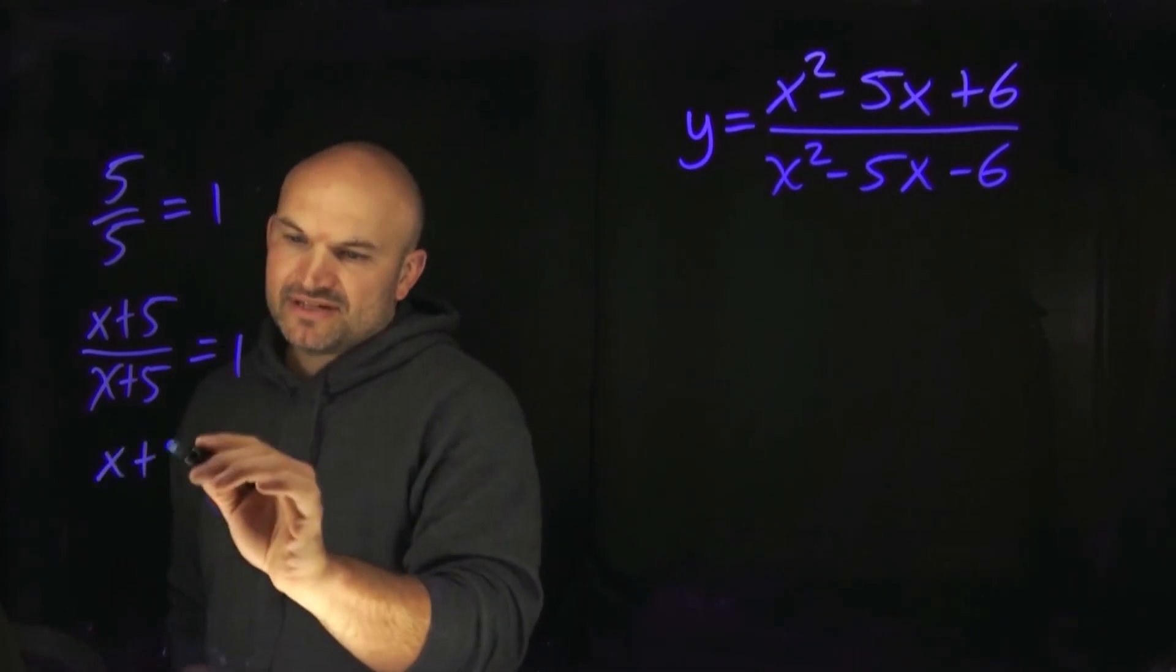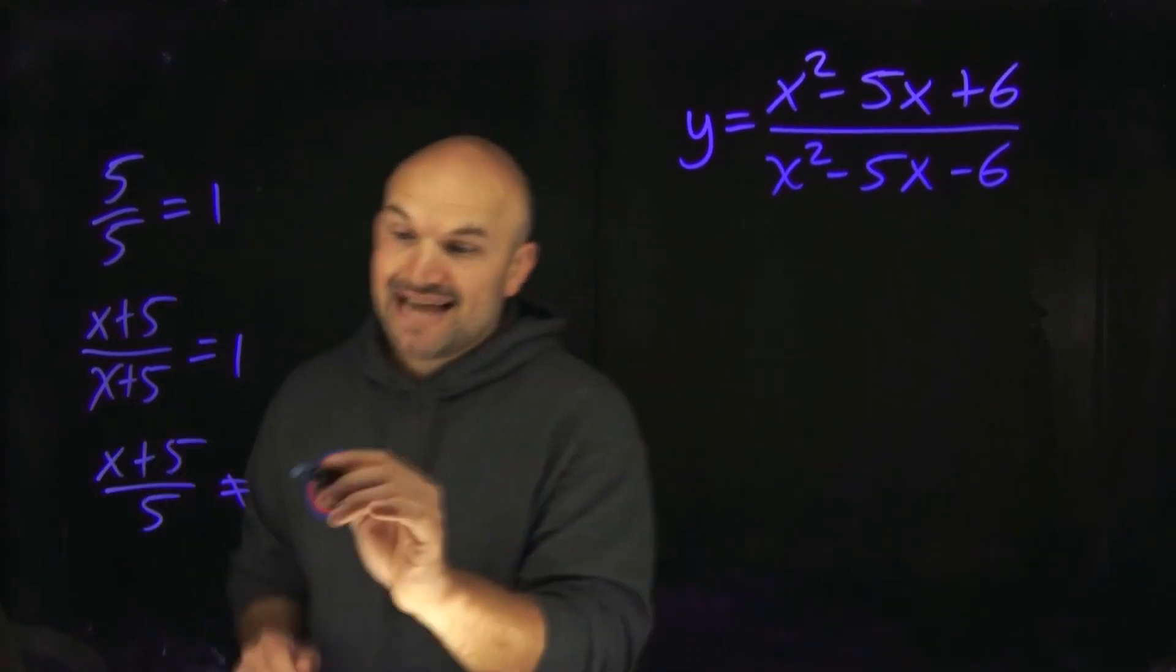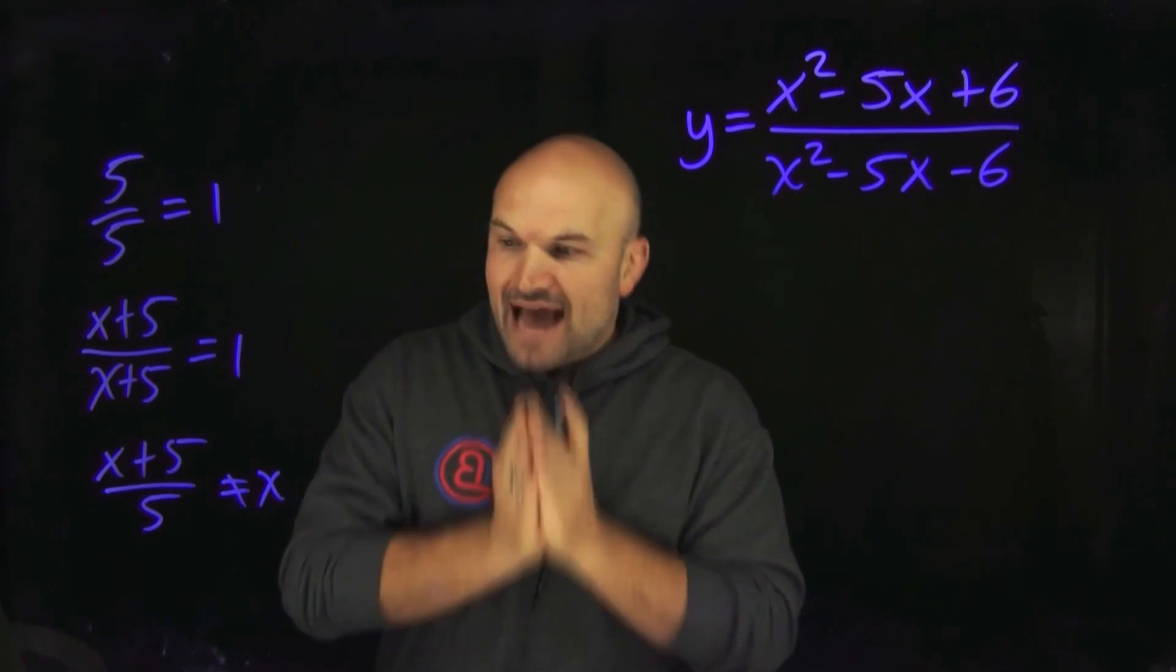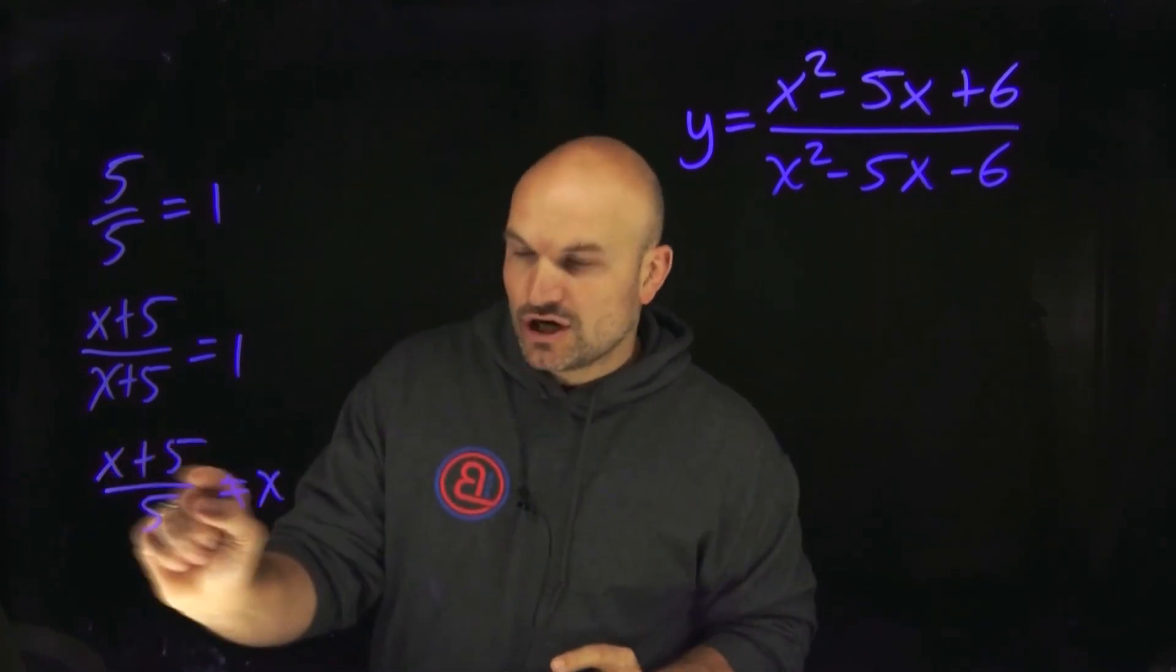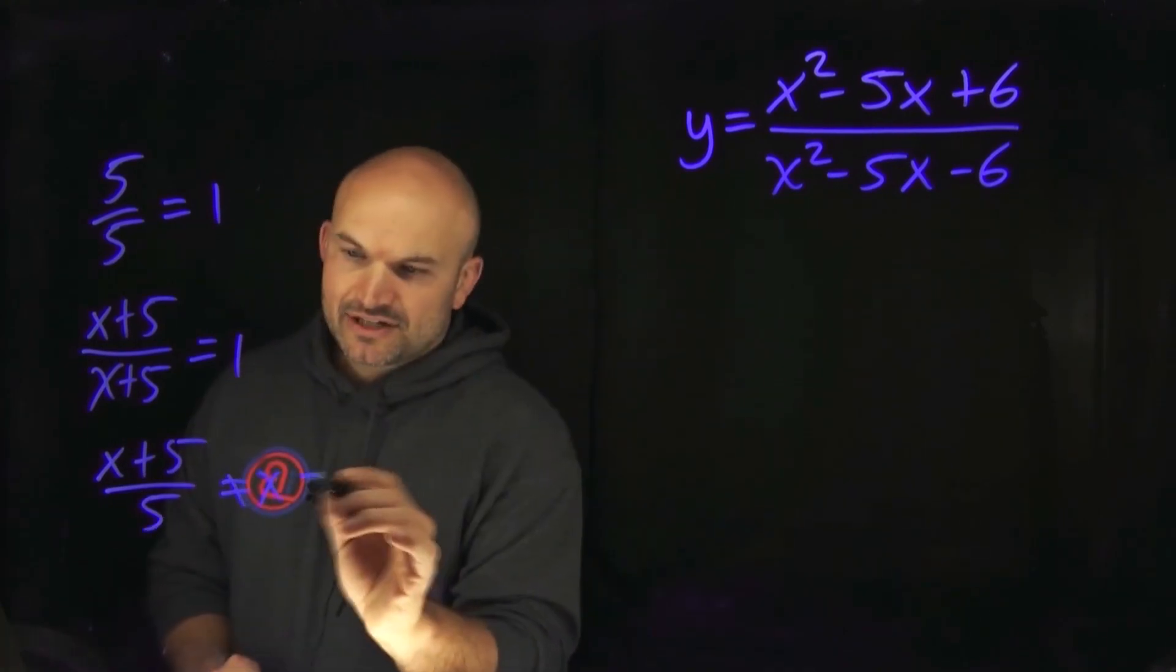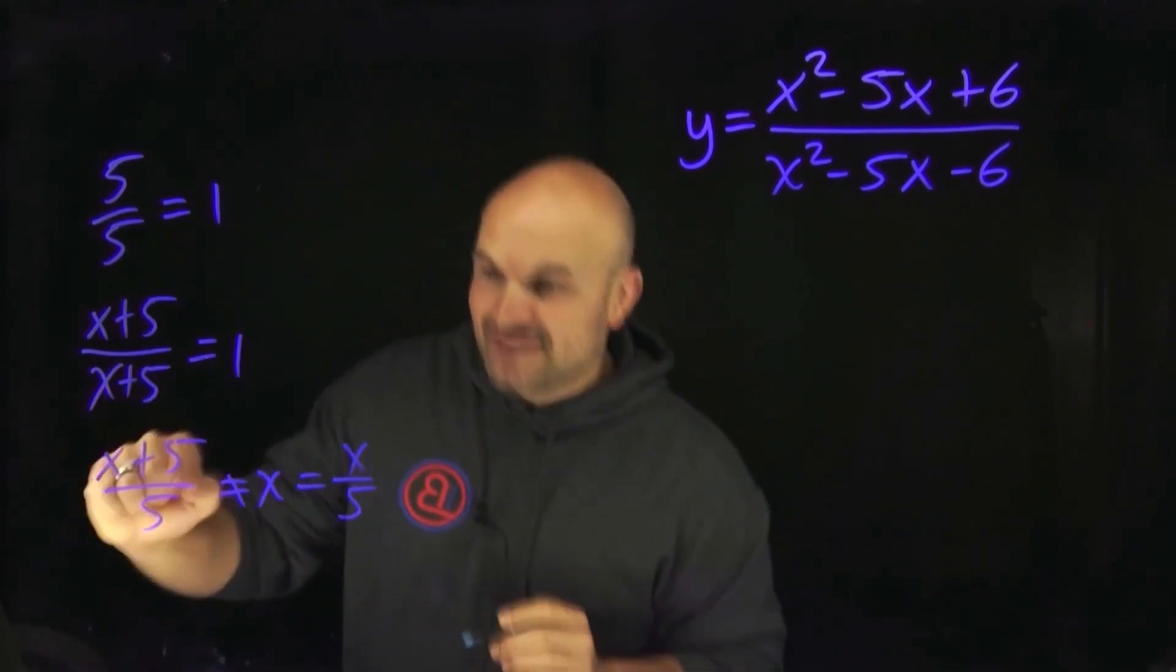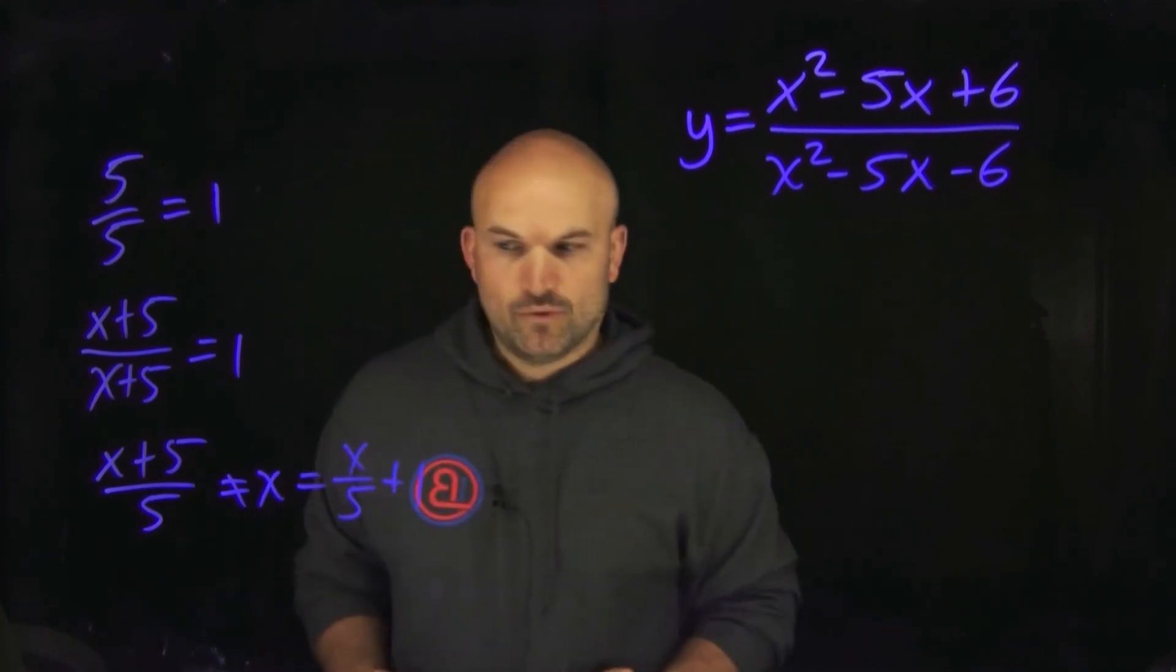However, if I had something like an x plus five divided by five, that does not equal an x. Okay. So what happens is when you have an expression divided by this five, both of these terms are being divided by five. So what this is actually equal to is x divided by five and five divided by five, which is a positive one.